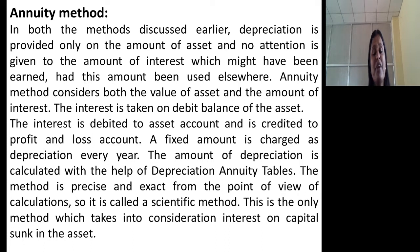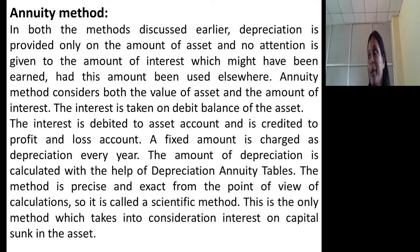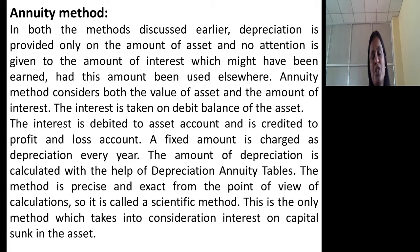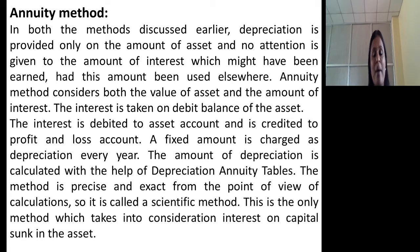Under this method, a fixed amount is charged as depreciation every year. The amount of depreciation is calculated with the help of a depreciation annuity table. The method is precise and exact from the point of view of calculation, so it is called a scientific method. This is the only method which takes into consideration interest on capital sunk in the asset, meaning interest on capital invested on the asset.